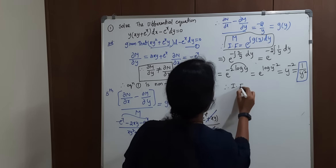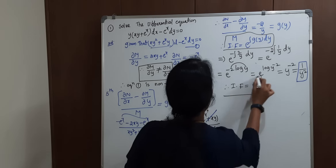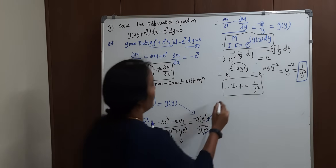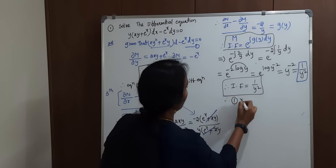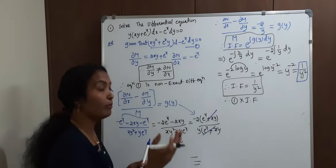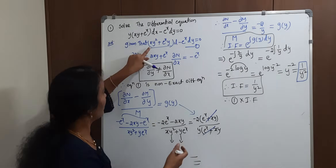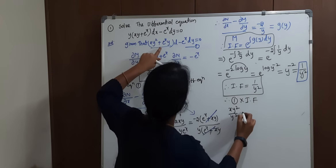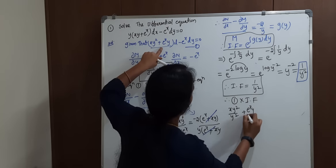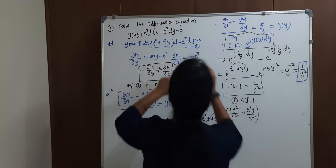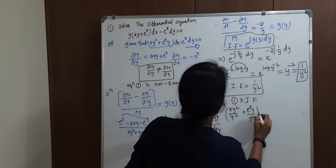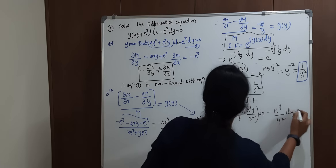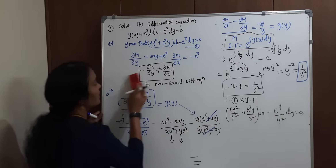Our integrating factor is 1 by y squared. What next? Multiply the integrating factor with equation 1. Therefore, multiplying: xy squared by y squared, e power x times y by y squared, into dx; and x e power x by y squared into dy.